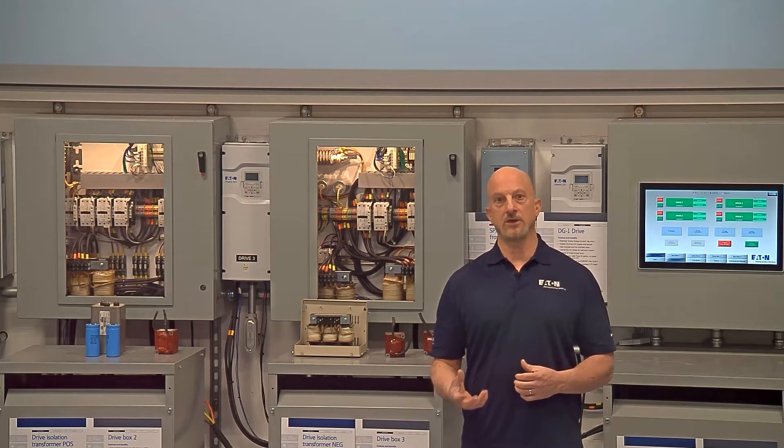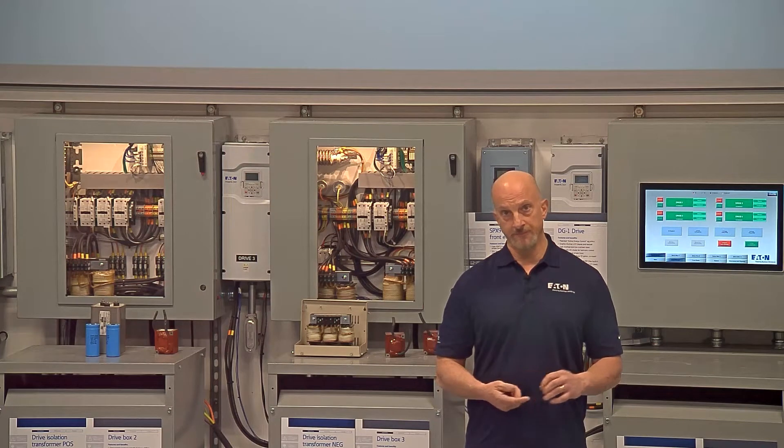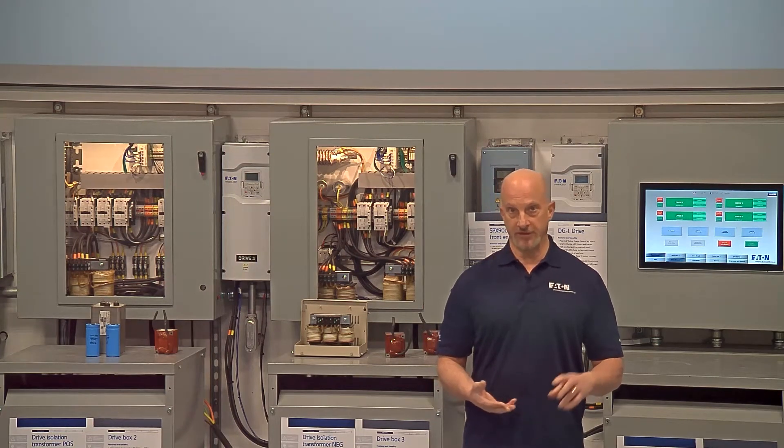So getting a corrected one is much more economical rather than trying to correct it on a system level with your transformers, double sized neutrals, and everything you have to deal with at that point.